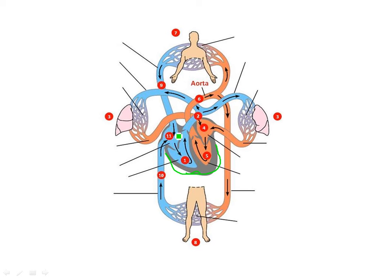Here we have the right side of the heart, outlined in green. On this particular image it's blue, and it's blue because it is filled with deoxygenated blood. We know the blood is deoxygenated because it has just returned from the body — from the areas above the heart and the areas below the heart.